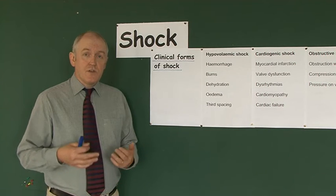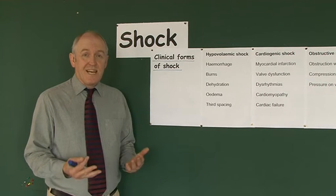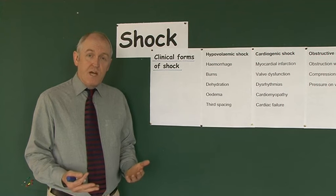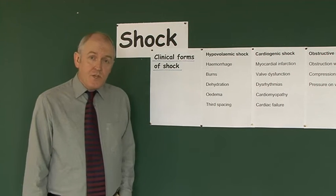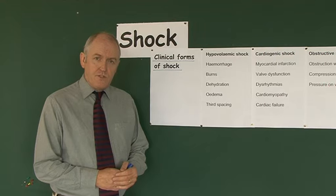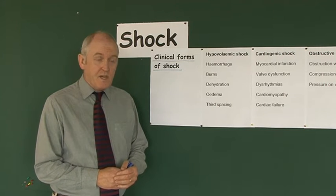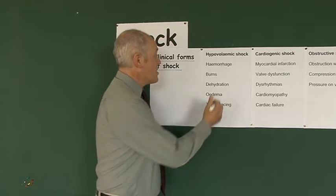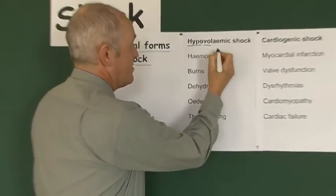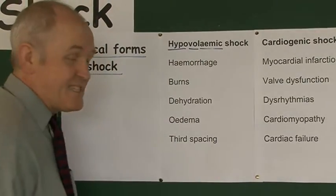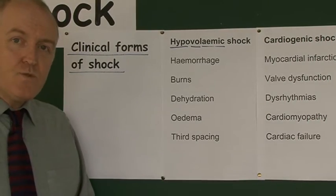We're going to look at the causes of shock and as we do this it'll give us a classification for describing shock that may arise in our patients. The first one is probably the most common one we come across in clinical practice: hypovolemic shock. Hypo means low, vol means volume, and emia is in the blood — hypovolemic shock.